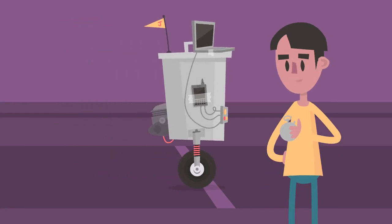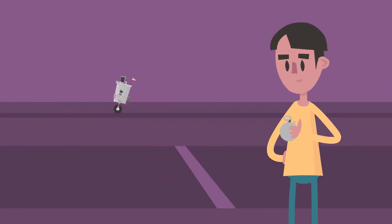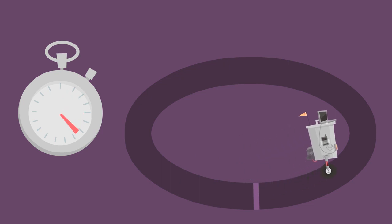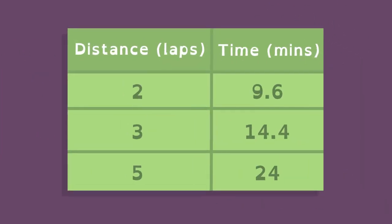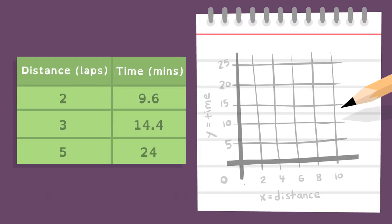Jason's robot is designed to travel at a constant speed, but does it really? Jason collects data and creates a graph and then roughly estimates the position of the points.